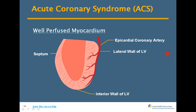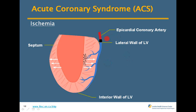Here we have a well-perfused myocardium with the coronary artery on the epicardium and blood flowing through to the endocardium. As ischemia starts, some blockage occurs further down into the endocardium. This is where ischemic events take place — patients present with chest pain and shortness of breath, and we give nitrates to open the vessels and perfuse the endocardium to alleviate their pain.